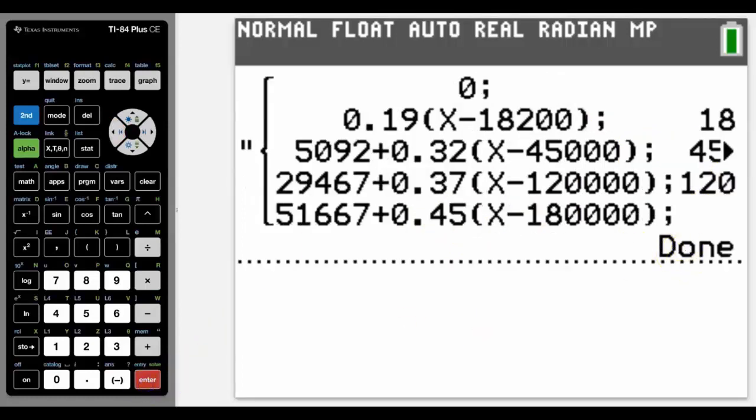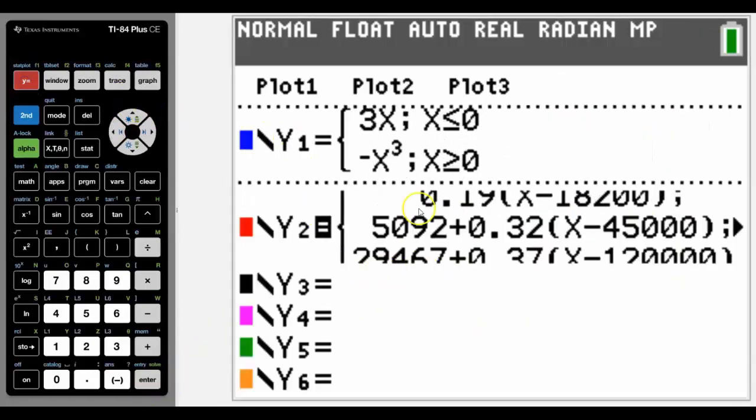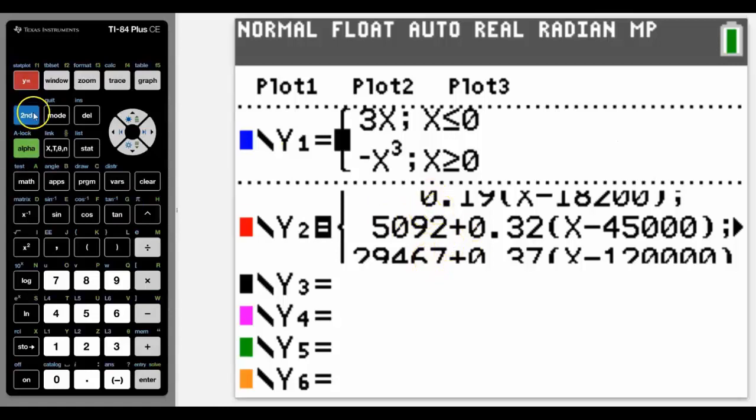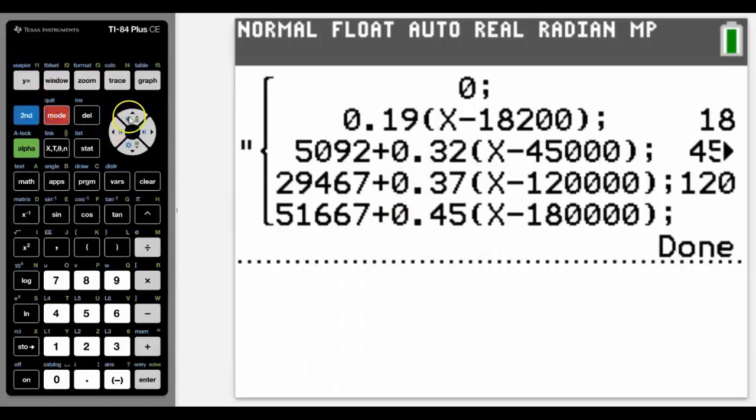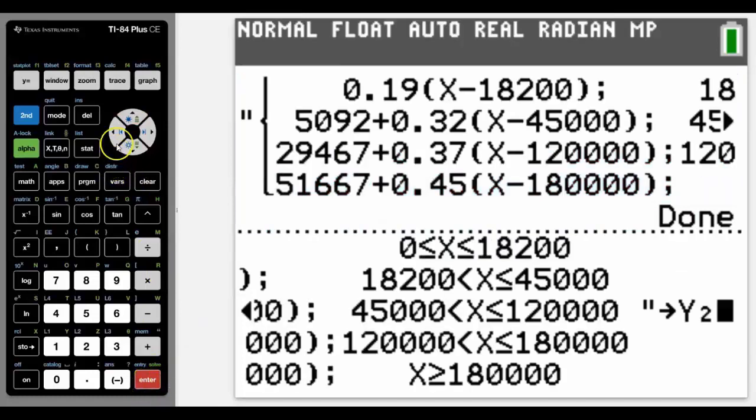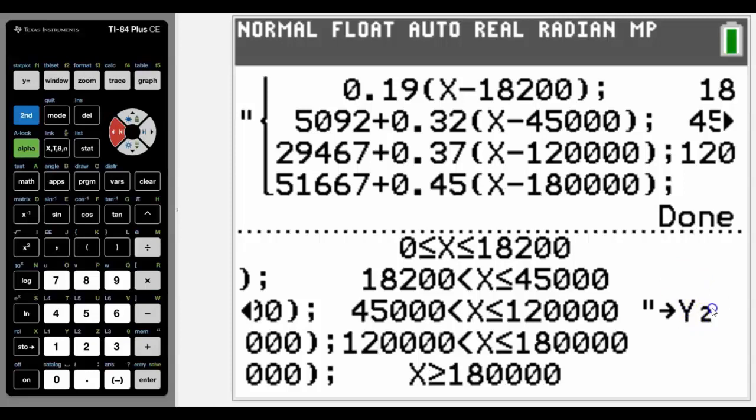So now when I press Enter, that's now going to be in our Y2 equation. Now we can see it here, and it also allows me to come up and copy it and actually work with it by arrowing back into it and changing it, and perhaps even storing it as a different Y equals value.